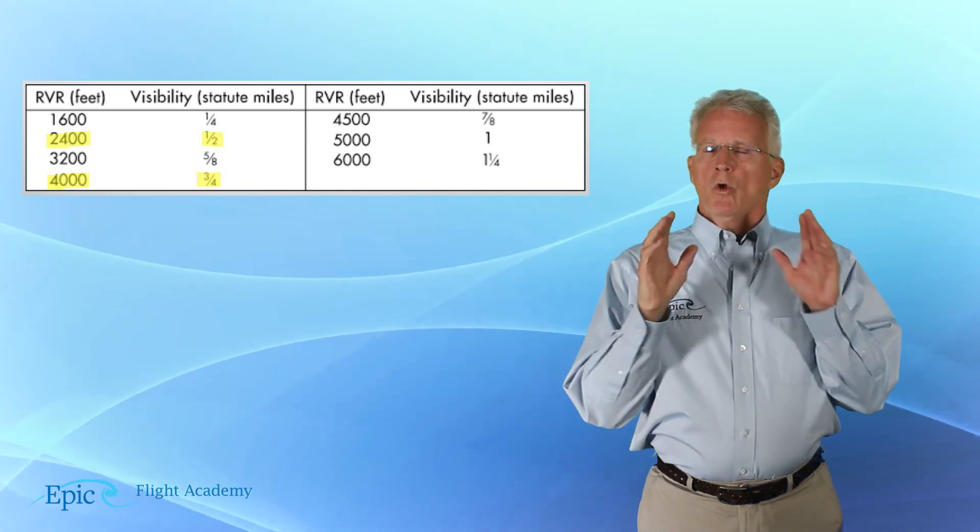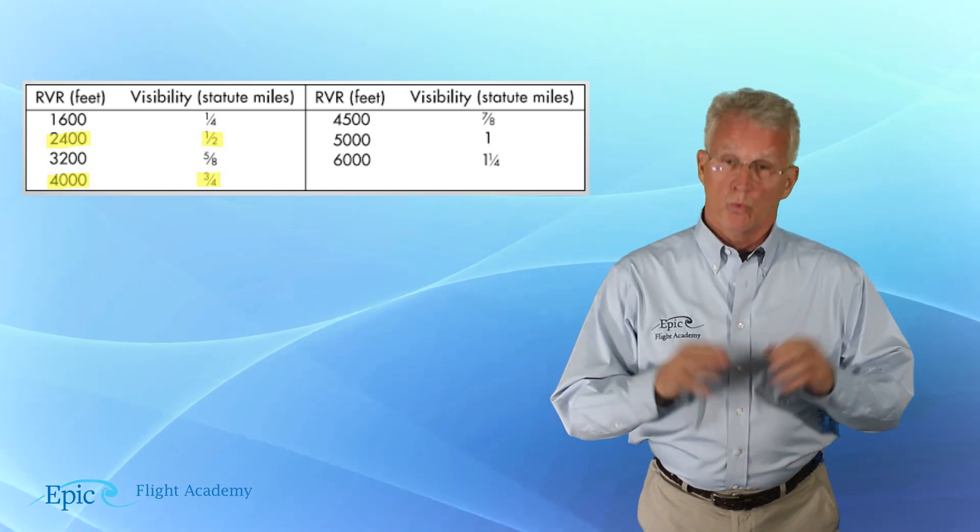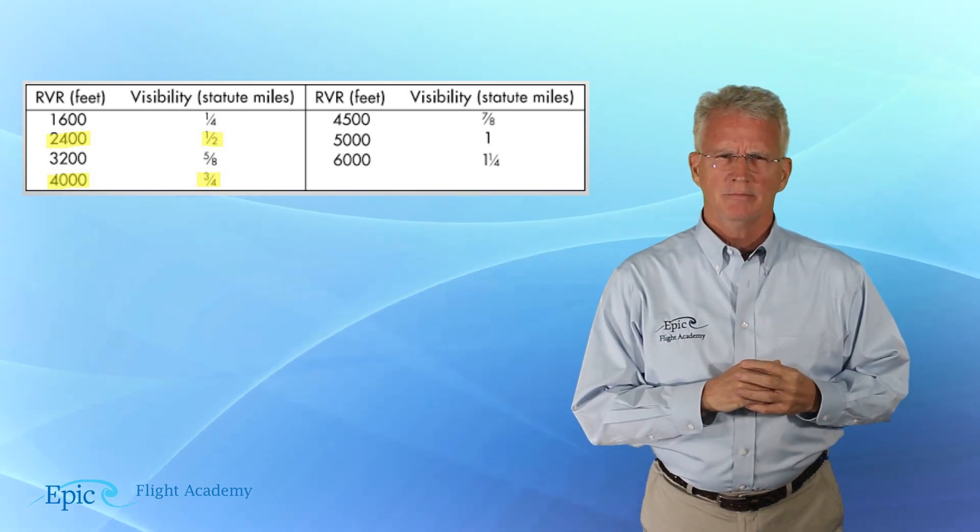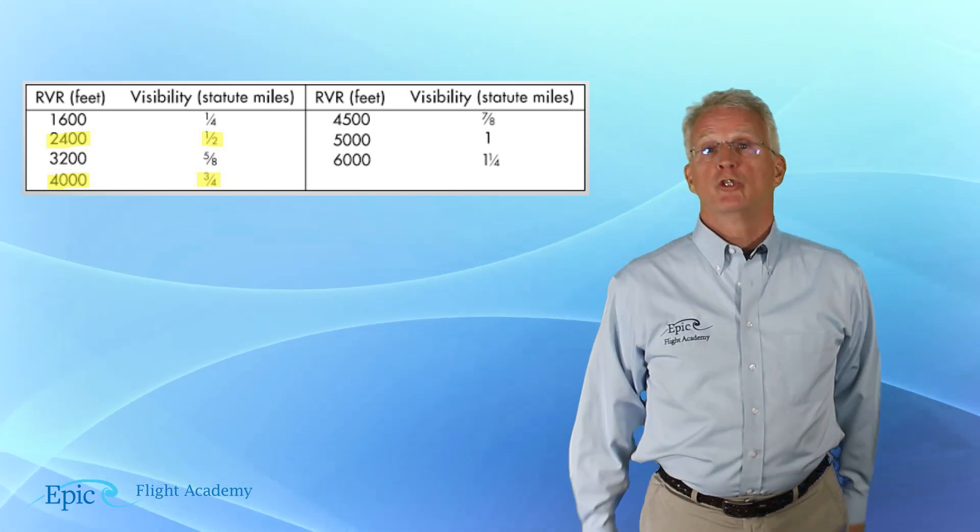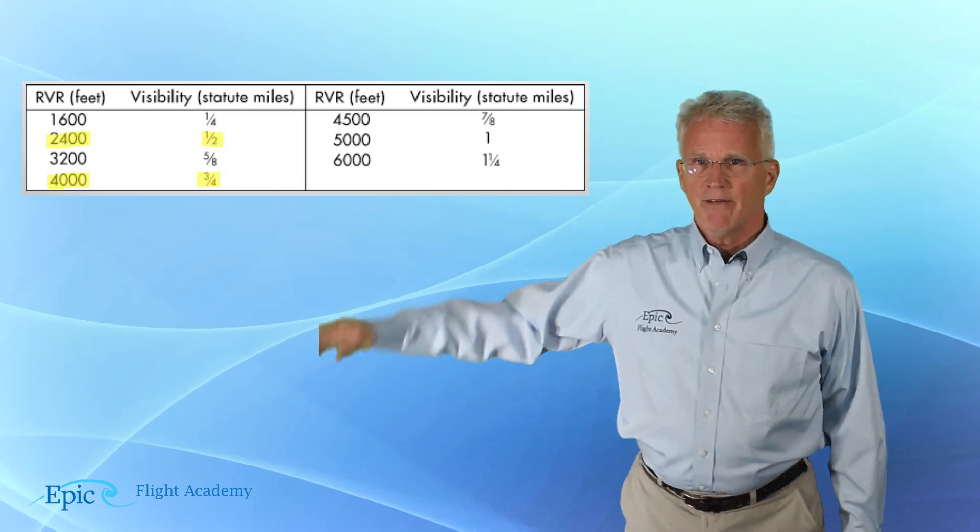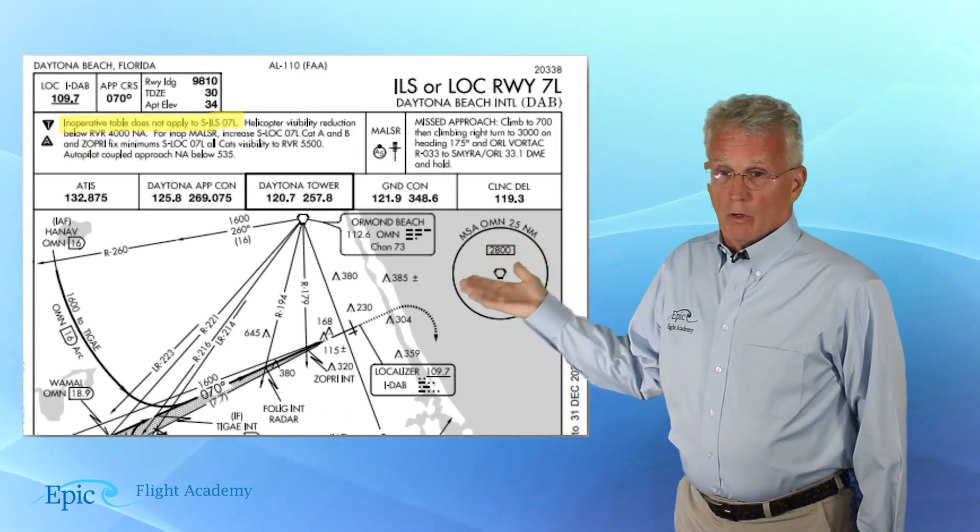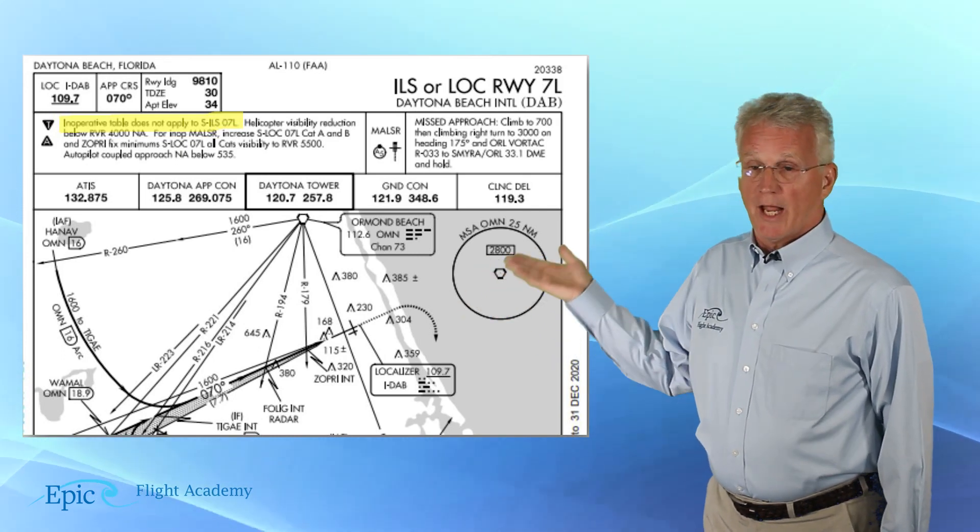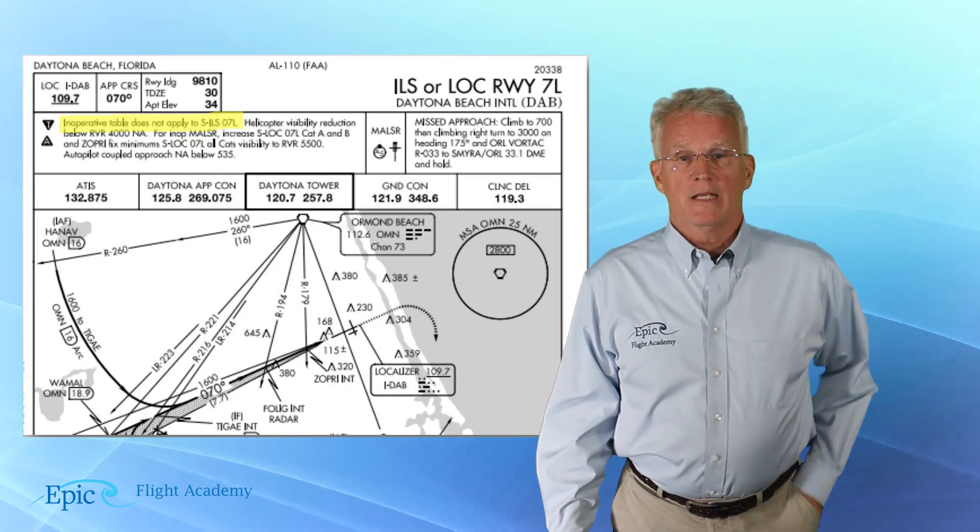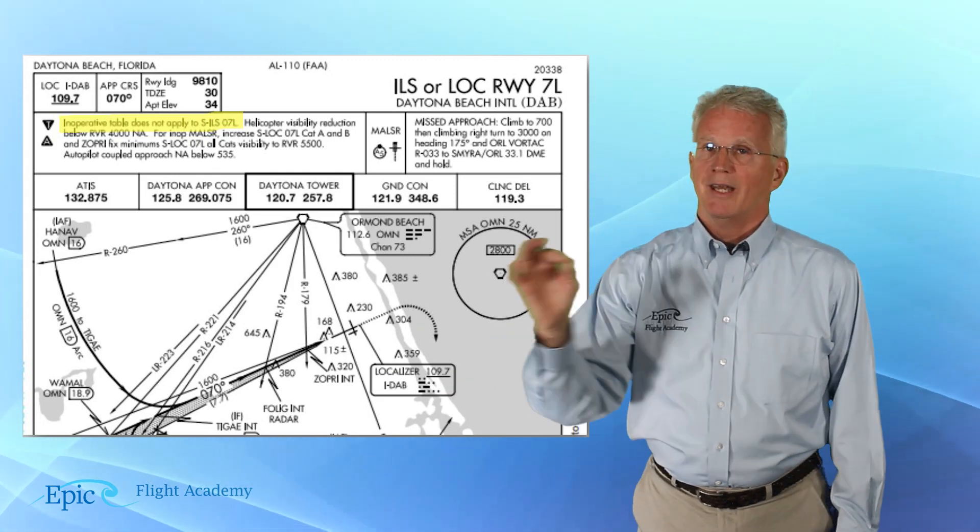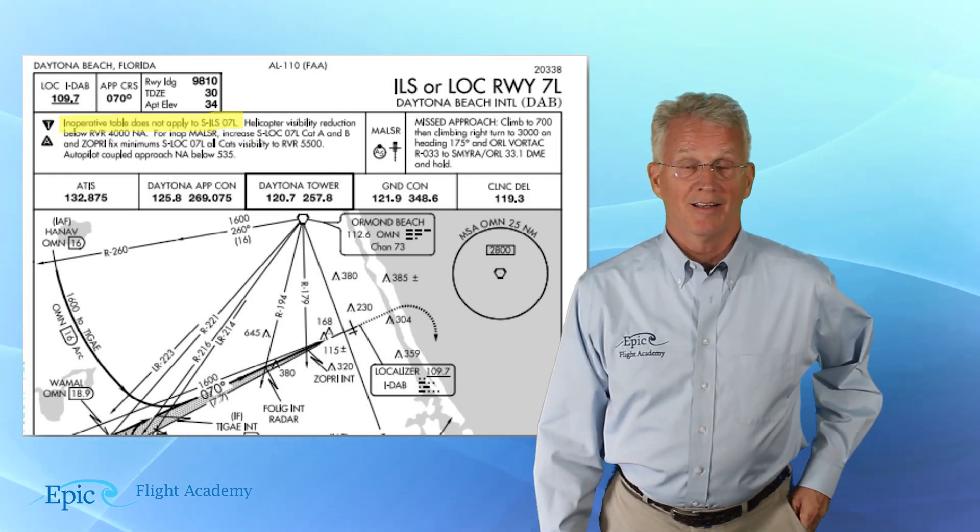Here's another question. Would there ever be a situation where the inop components table would not apply? To answer that, be sure to check the briefing strip. Have a look at our example here. This is the ILS or localizer, seven-left. And note, we have it highlighted in yellow. The inoperable table will not apply for ILS seven-left.